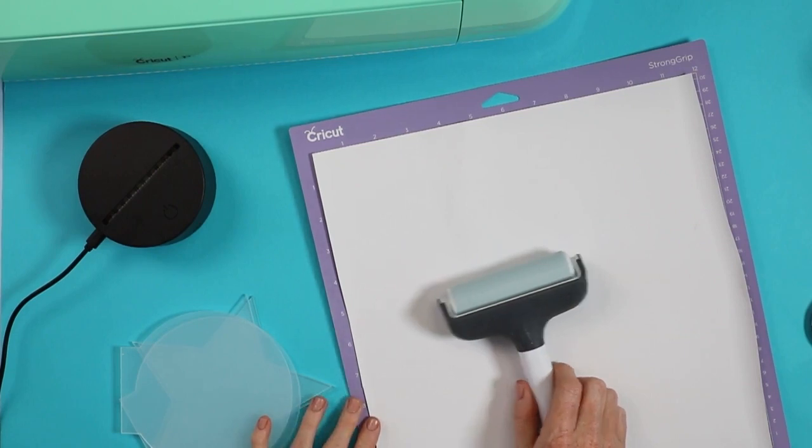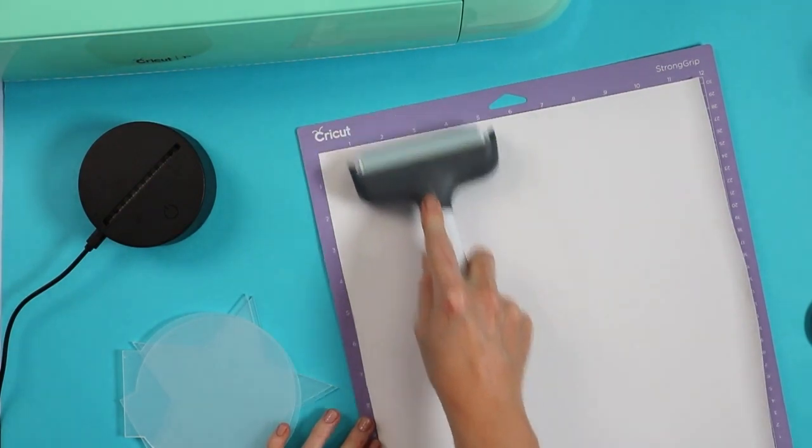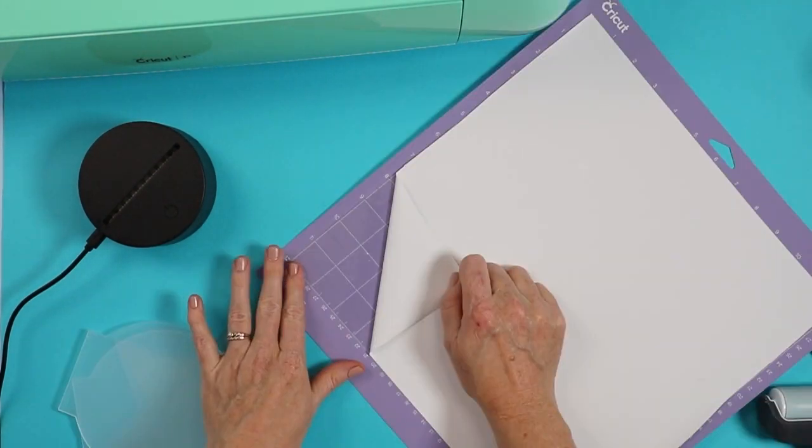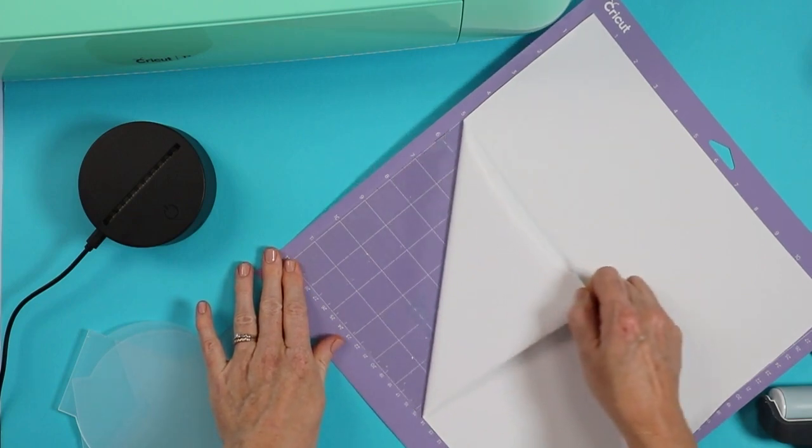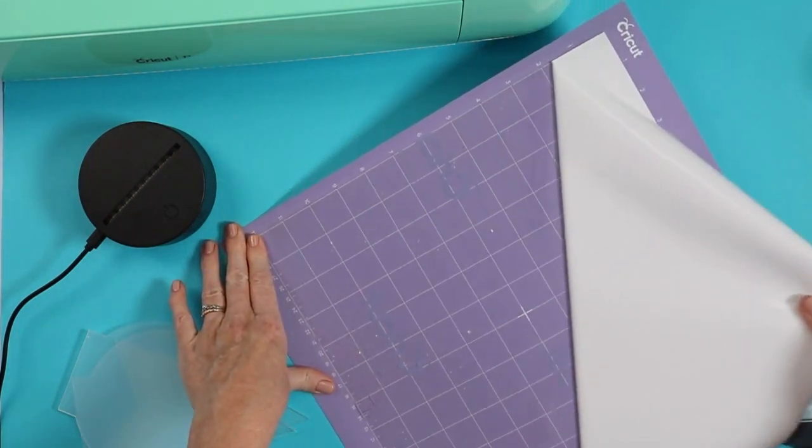The first thing you will want to do is add strong grip transfer tape down, top down, so the backing sheet is up onto your mat. After you get that down really well on your mat, you'll just want to peel the backing sheet away, leaving the transfer tape on your mat.